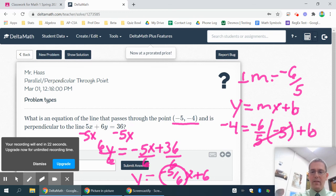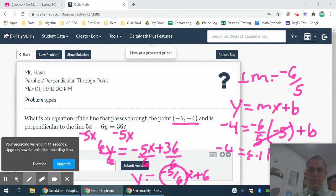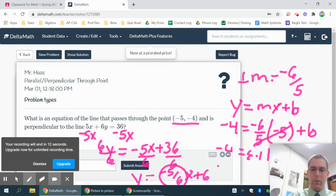The 5's cancel. That was nice. A negative times a negative is a positive. So negative 4 equals 6 plus b. And then subtract 6 from both sides. So negative 10 is equal to b.